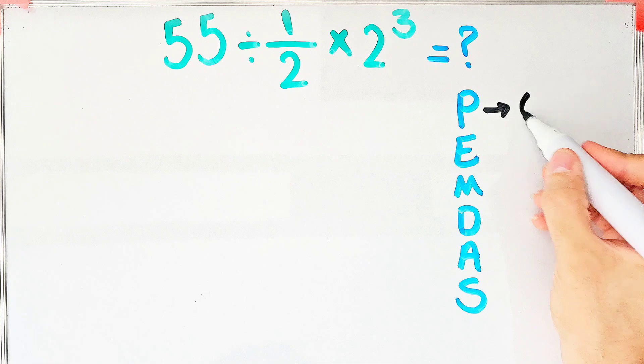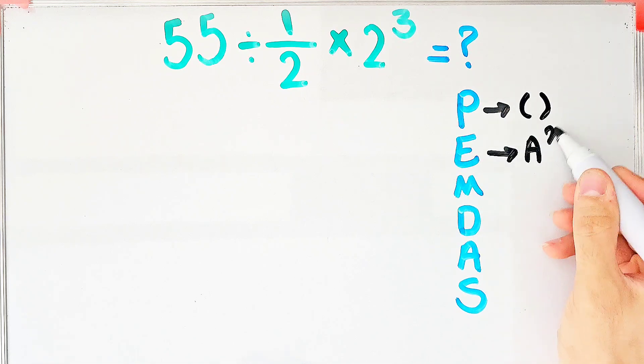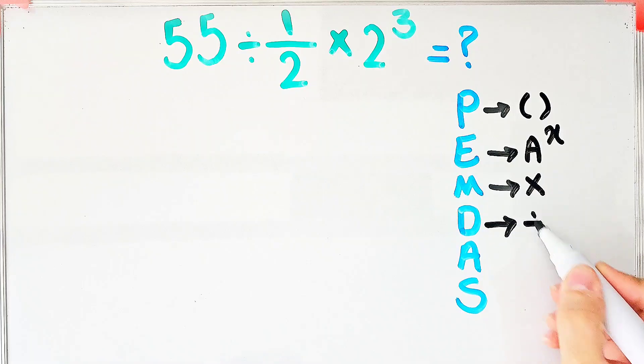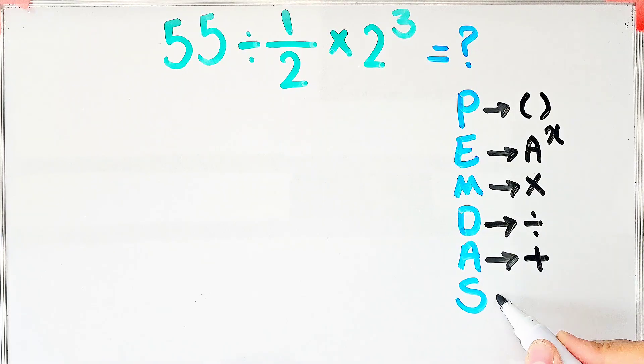In this rule, P stands for parentheses, E stands for exponent, M stands for multiplication, D stands for division, A stands for addition, and S stands for subtraction.